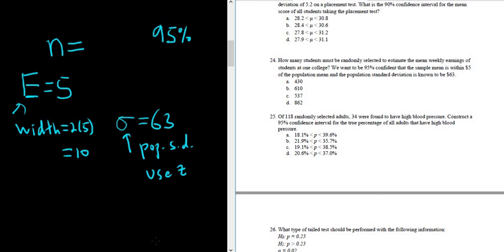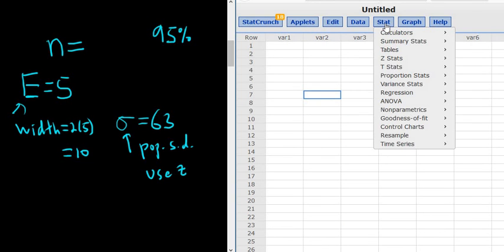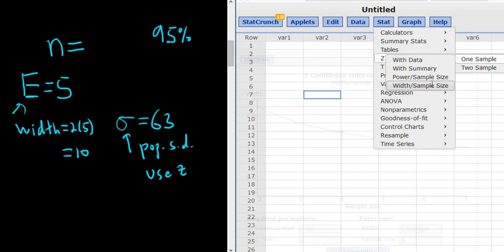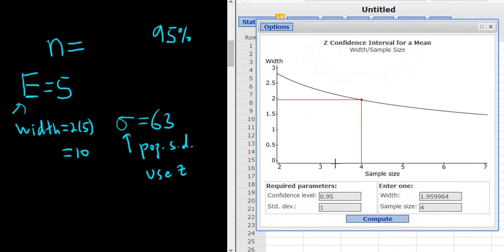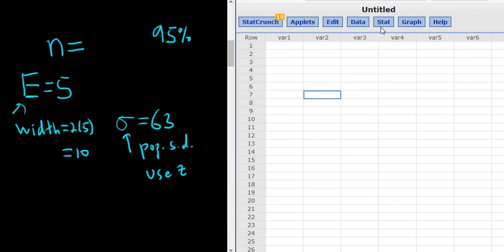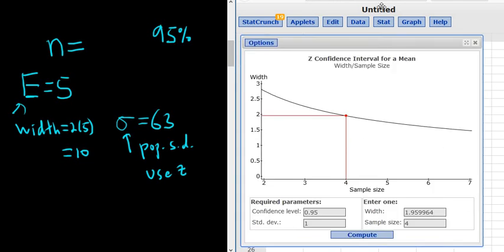We're going to use Z in StatCrunch. So we go to stat, Z stats, one sample, and then we have the width, and we're looking for the sample size. Whoops, I think I picked the wrong one. Did I... No, I picked the right one. Let me just do it again. Stat, Z, one sample, width, sample size. Yeah, it's good.